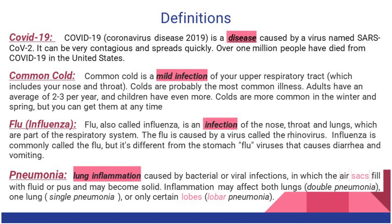The flu is also called influenza, which is the name of the virus that causes the flu. It is an infection of the nose, throat, and lungs, which are part of the respiratory system. Flu viruses are different from stomach viruses, which cause diarrhea and vomiting. Pneumonia is a lung inflammation caused by bacteria or virus in which the sacs fill with either fluid or pus. It can be very serious, and you need antibiotics.